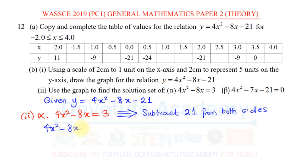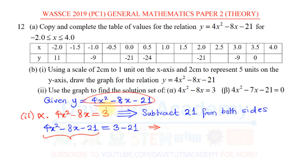So I will have: 4x² - 8x - 21 = 3 - 21. What I do to the left-hand side, I also do to the right-hand side. If I move the -21 to the left-hand side, it becomes -21 + 21 = 0, giving me back the original equation. So I'm on track. The left-hand side is now exactly the same as y. So this is now y, and I can say y = 3 - 21, which is y = -18.